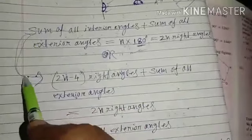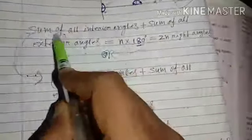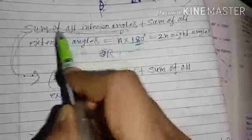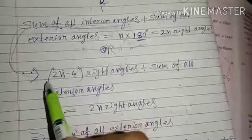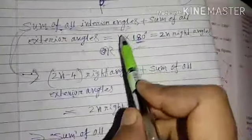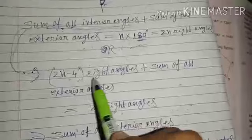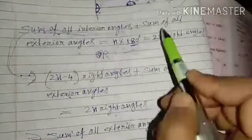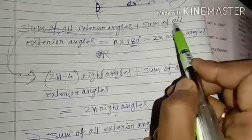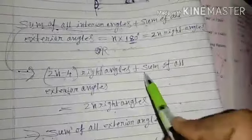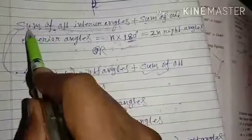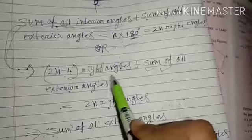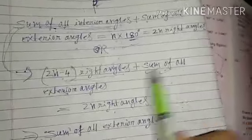Next: sum of all interior angles equals twice n minus 4 right angles. So, sum of all interior angles equals twice n minus 4 right angles, plus sum of all exterior angles.